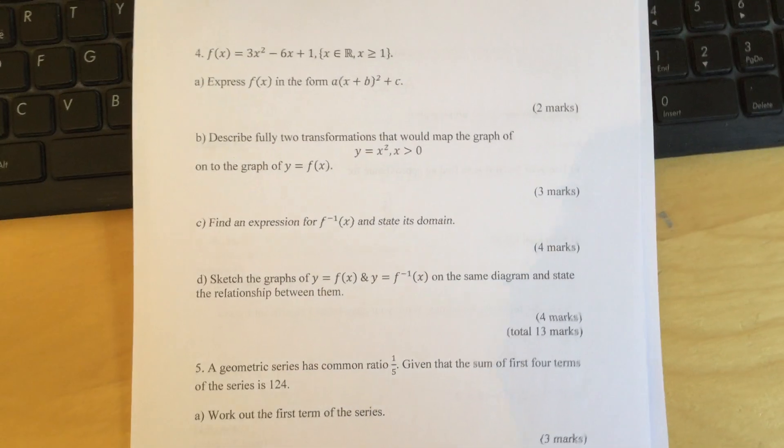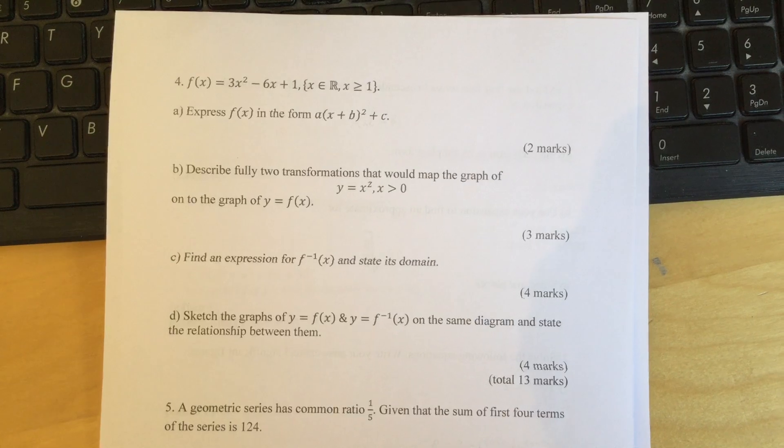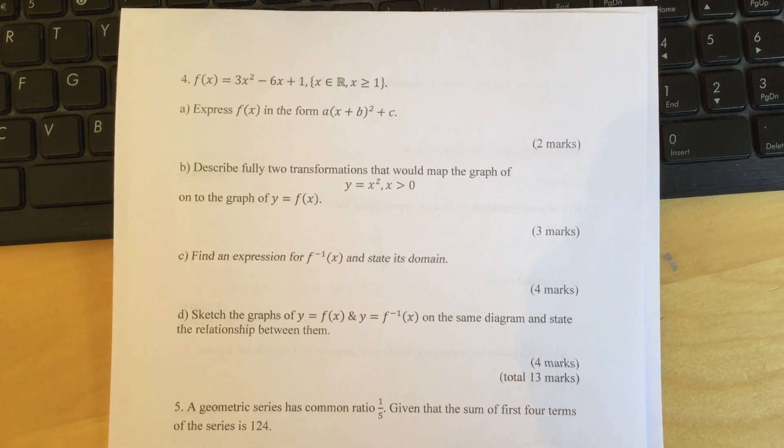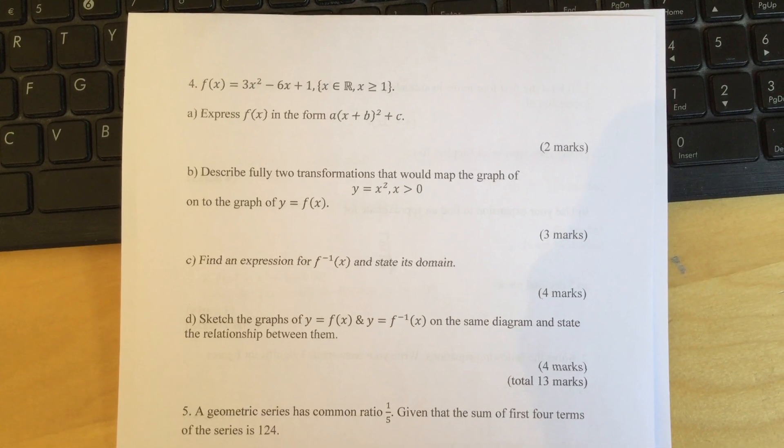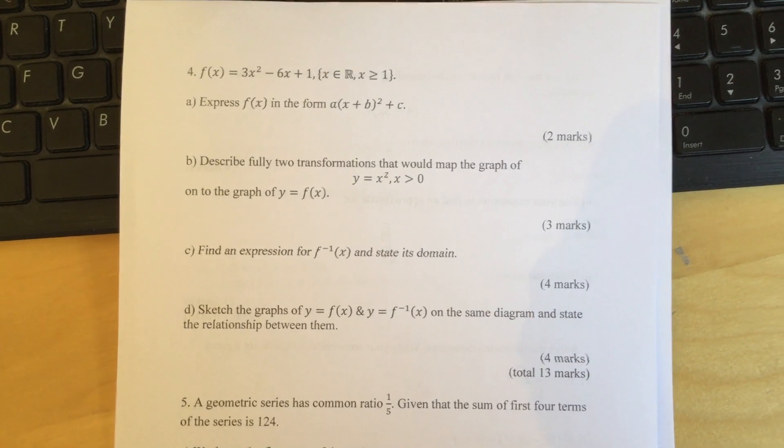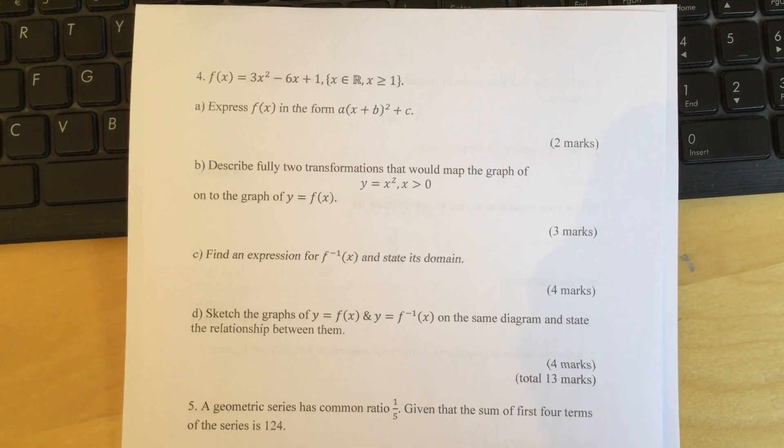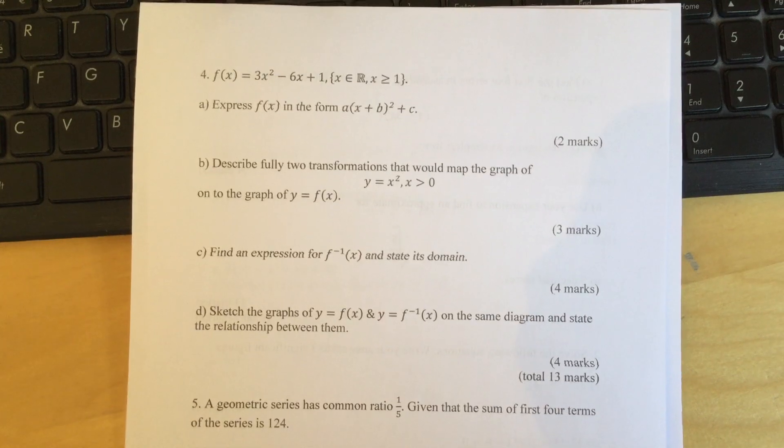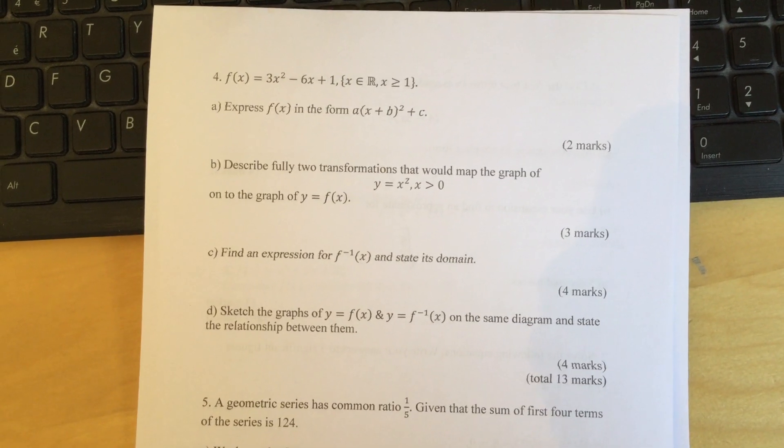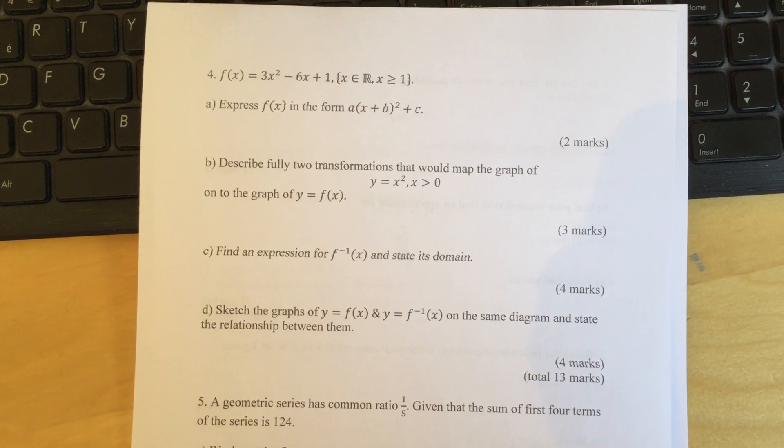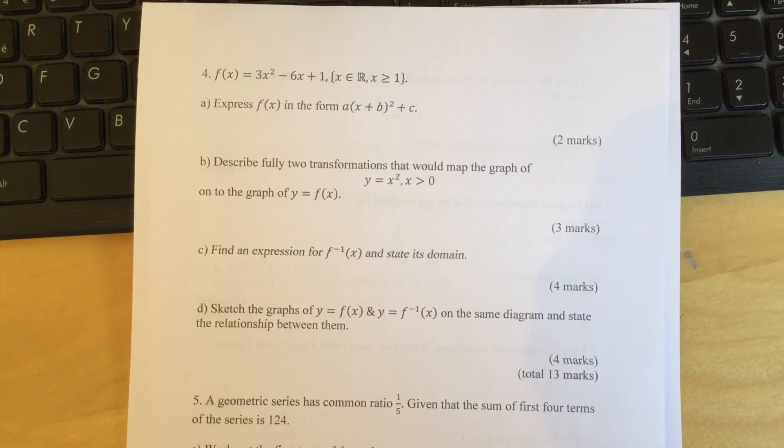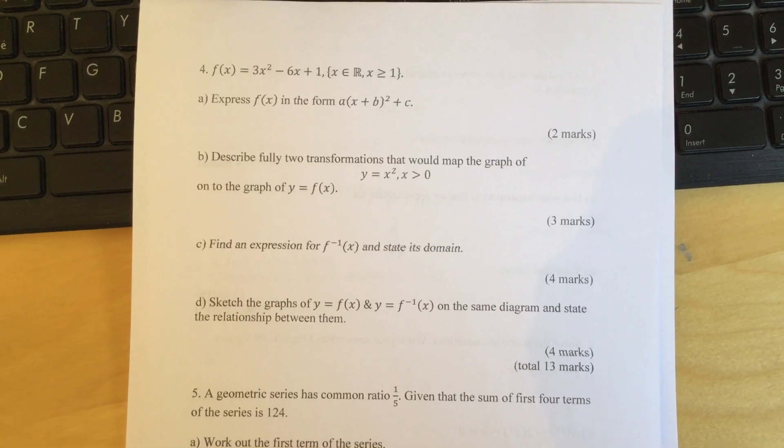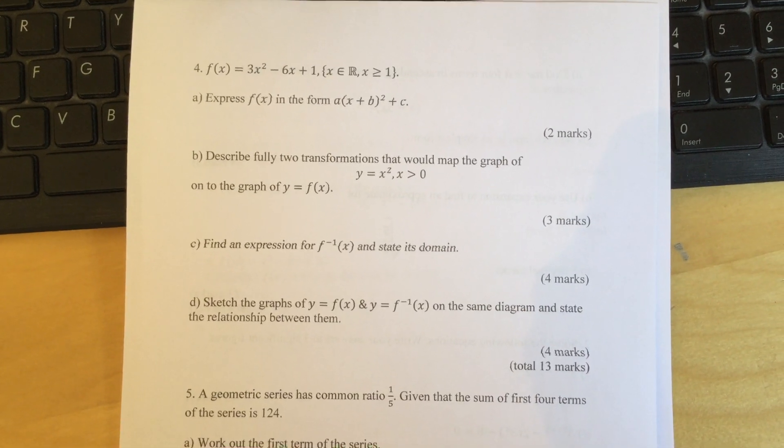Question 4: f(x) = 3x² - 6x + 1, where x is a real number and x ≥ 1. Part A: Express f(x) in the form A(x + B)² + C. Part B: Describe fully two transformations that would map the graph of y = x², where x > 0, onto the graph of y = f(x).